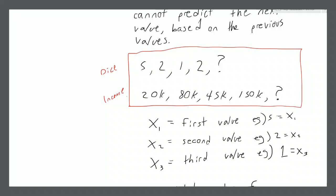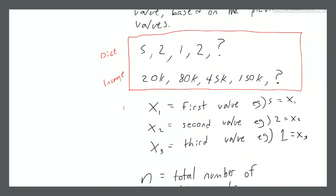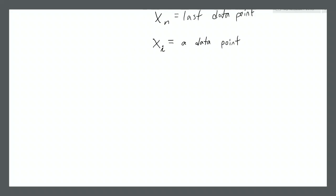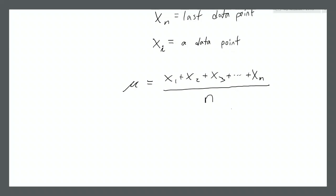The technical term for the average is the mean value. We also call it the expected value because when observing a random variable, you expect the next value — the one you cannot predict — to be somewhere around the mean. The mean is calculated by adding up all the values and dividing by the number of values. We have a symbol for mean value: the lowercase Greek M, pronounced mu. It means add up all of the values — x₁ plus x₂ plus x₃, and so on all the way up to the last value xₙ — and then divide by the number of data points. That's the mean value or the average value.